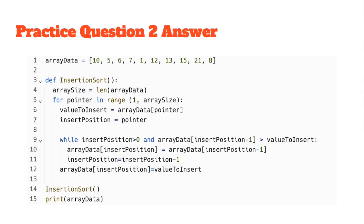Hopefully you've got something like this: array data is assigned some values, and you've written an insertion sort function where array_size is the length of array data. The pointer is in the range starting from position 1 to the length of the array. value_to_insert is the data at that particular pointer value, and insert_position is the actual pointer. Then a while loop handles the comparison and swapping. In the main program you call insertion sort and print the array data to check if it was sorted. If you haven't understood it — code it, test it, and see if it works.